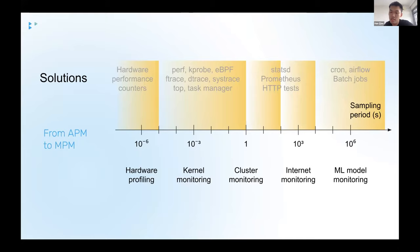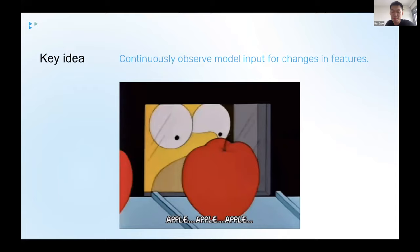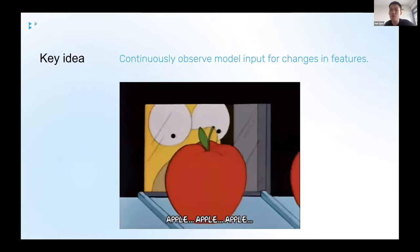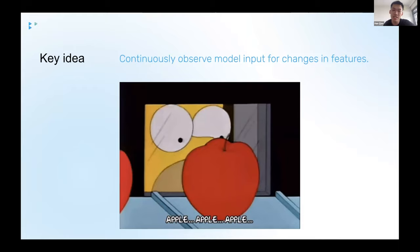So the key idea here is to continuously observe the model input stream for changes in the features. If I were to use that analogy, this is like having a pair of eyes constantly watching your model input stream. In this case, it's a stream of apples. And it's looking out for changes in the features, such as the diameter of the apple, the size, the color, the number of leaves on the stalk, all these could be used as indicators of your model performance.